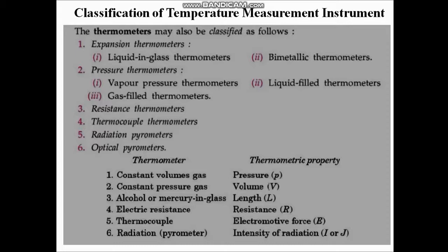Temperature measurement instruments can be broadly classified into two types. First: non-electrical type, and second: electrical type. Non-electrical type instruments do not use any power source in terms of resistance, EMF, or radiation. In electrical type instruments we have a power source, resistance, and EMF. Expansion thermometer and pressure thermometer are non-electrical, whereas resistance thermometer, thermocouple thermometer, radiation pyrometer, and optical pyrometer are electrical type.